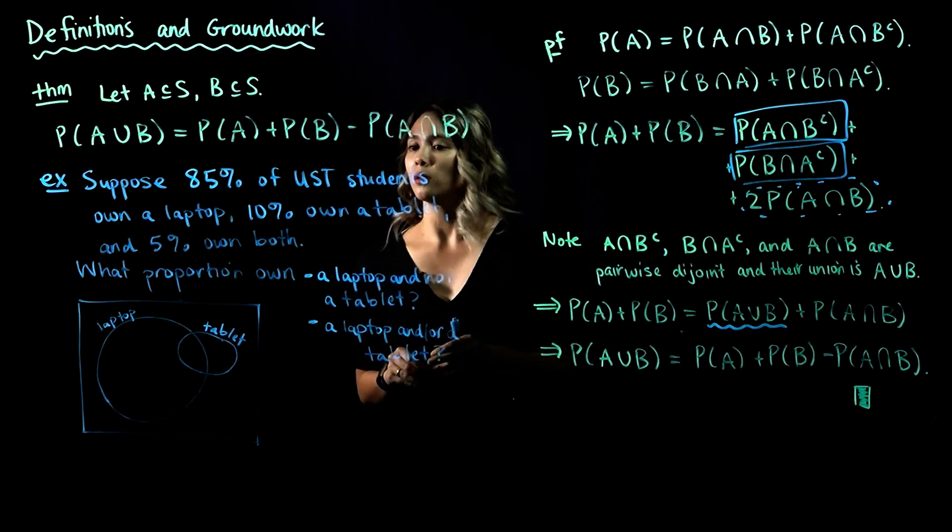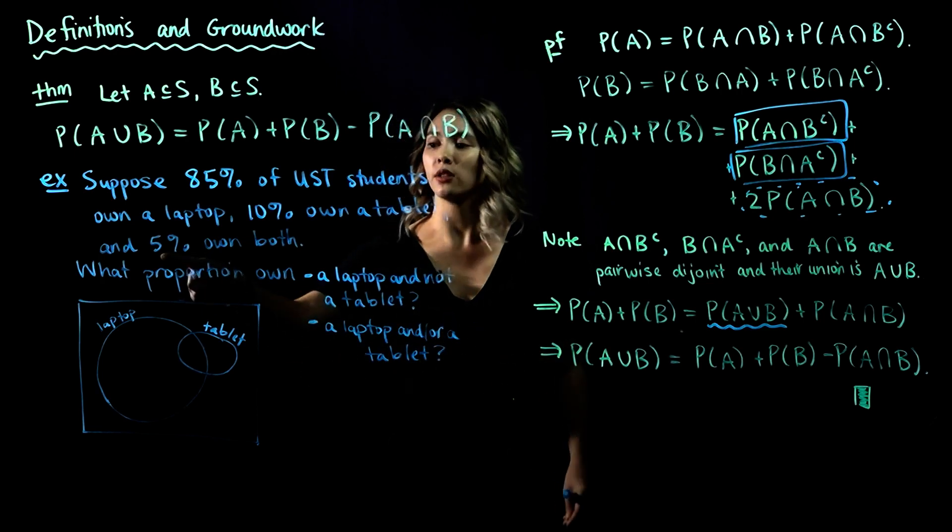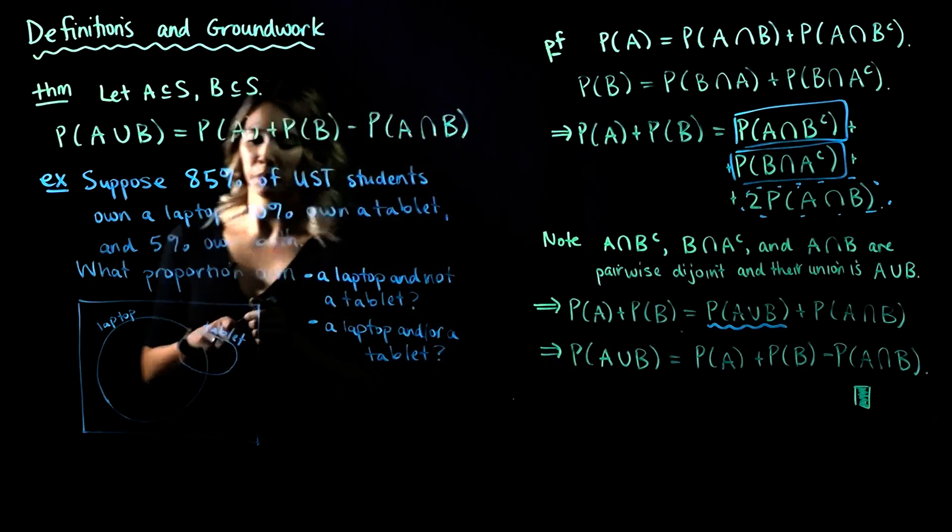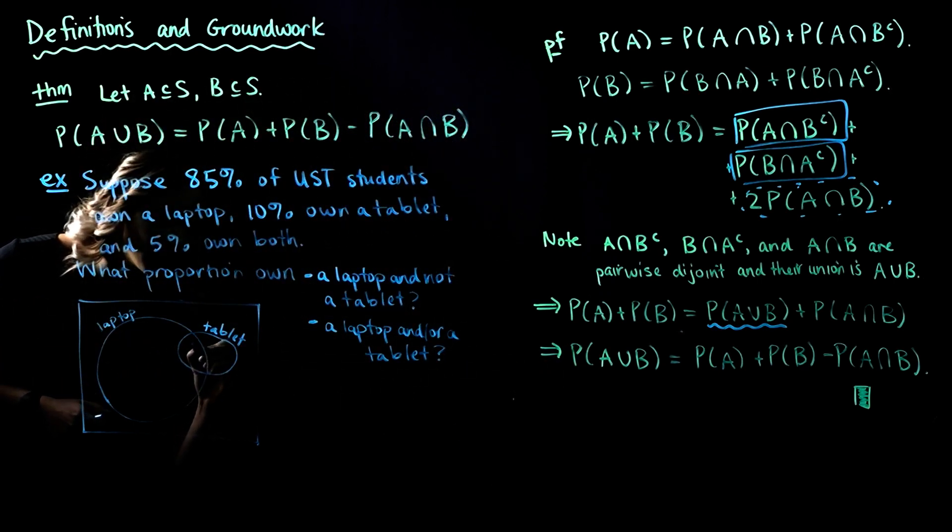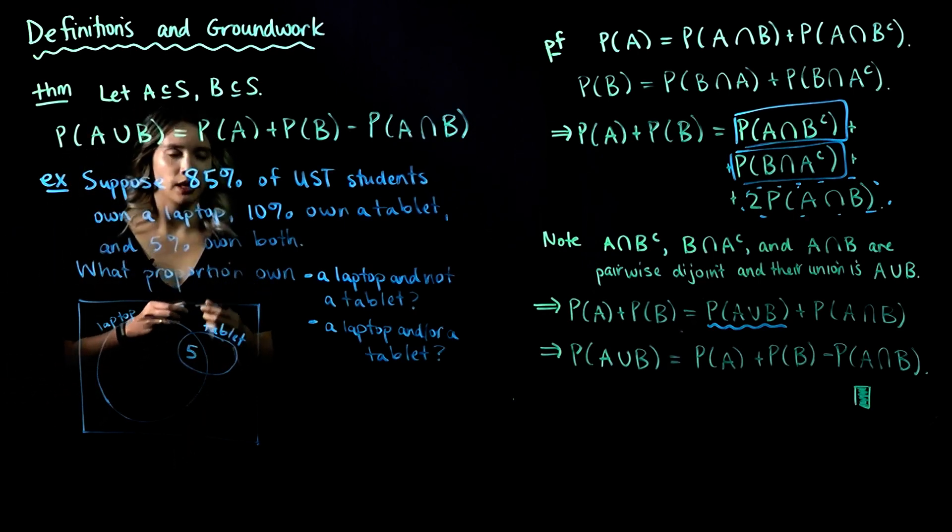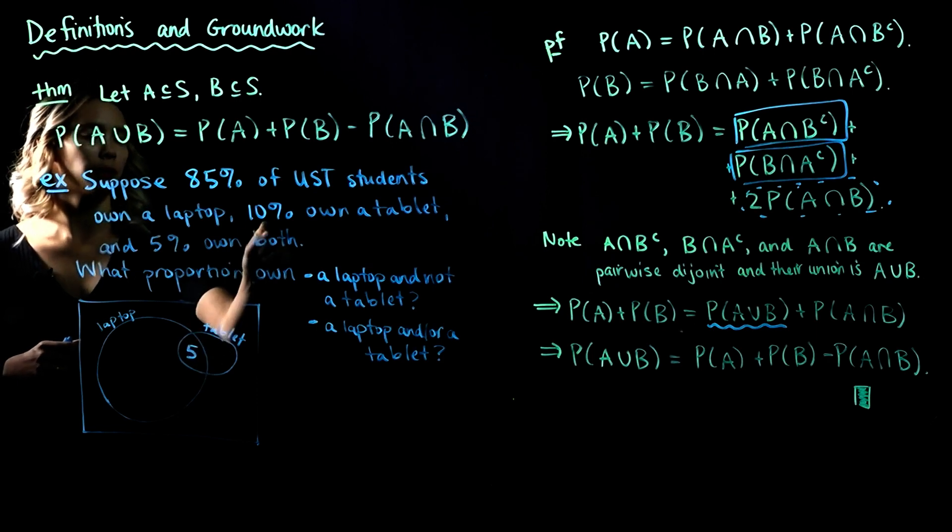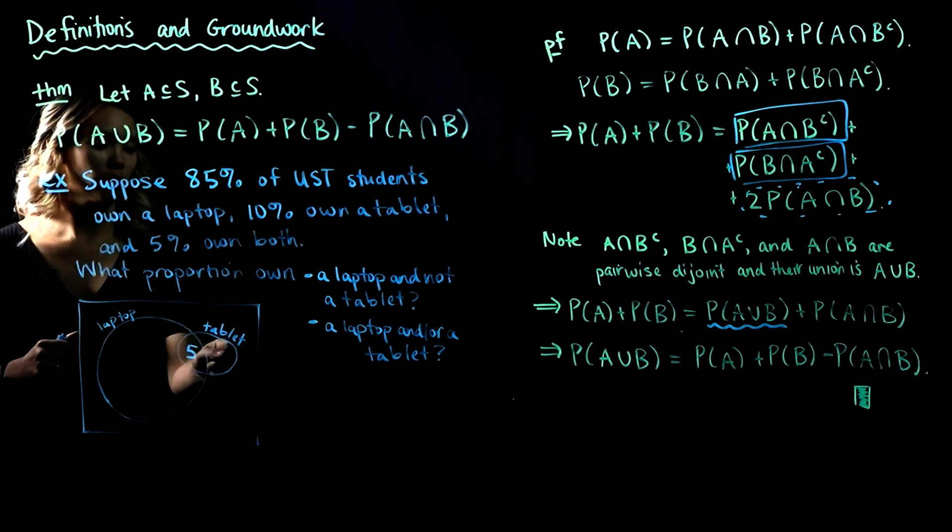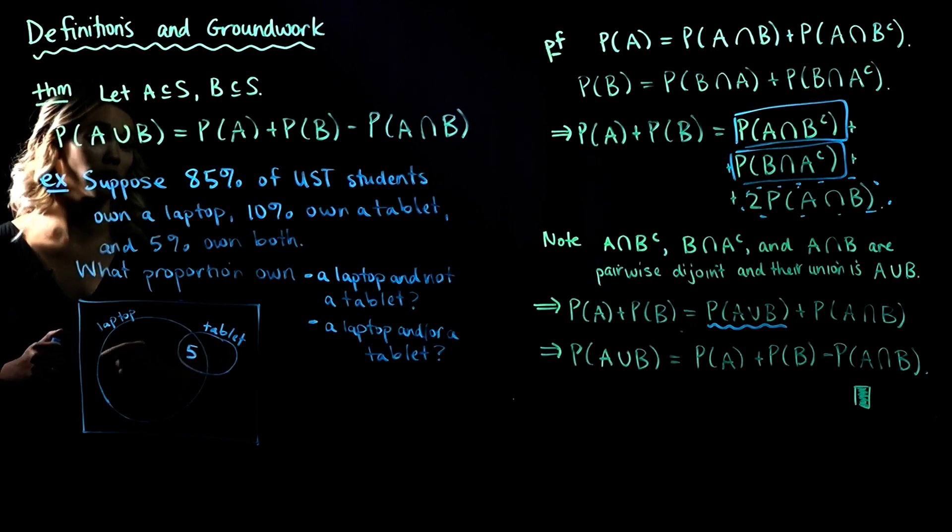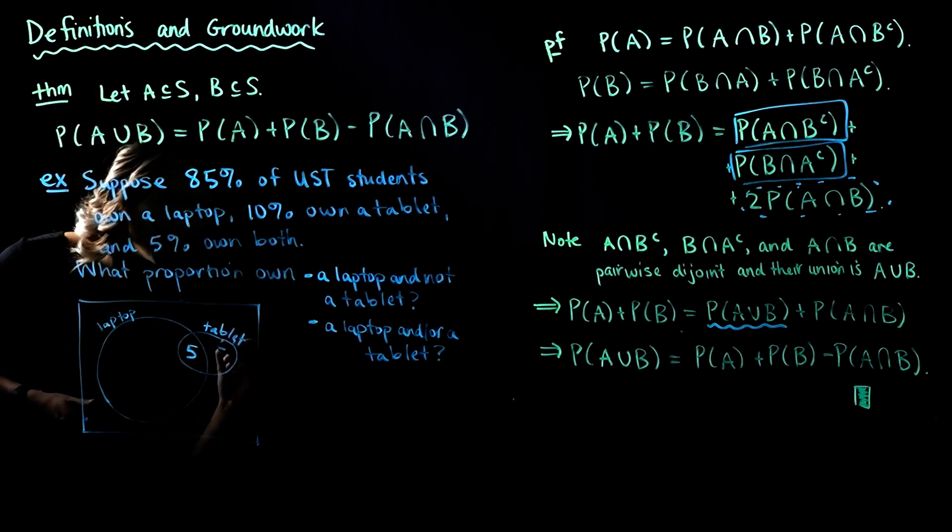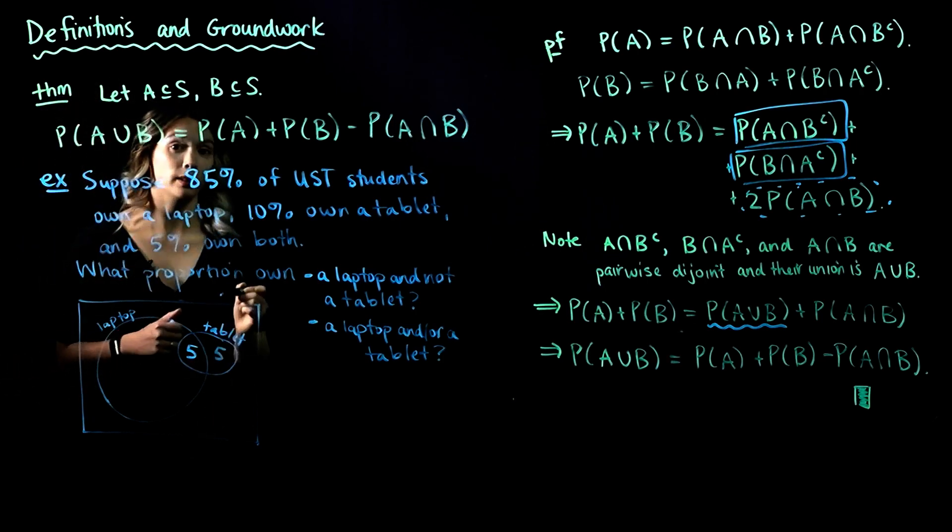All right, so 5% own both a laptop and a tablet. So let's put 5 in this intersection here. Now, if we look at the entire circle for tablet, we know 10% own a tablet, so this entire circle is 10%, but the intersection part is 5. So that means that there's 5 left over for students who own a tablet and not a laptop.